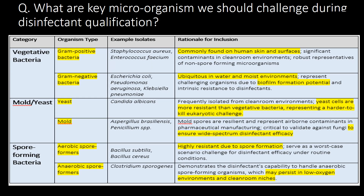What are the key microorganisms we should challenge during disinfectant qualification? Refer to the table below for category, organism type, example isolates, and rationale for inclusion in the disinfectant qualification study. Key organism types are gram-positive bacteria, gram-negative bacteria, yeast, mold, aerobic spore formers, and anaerobic spore formers.